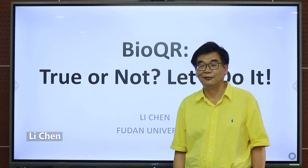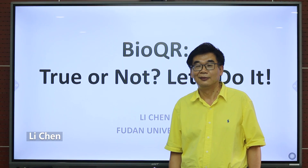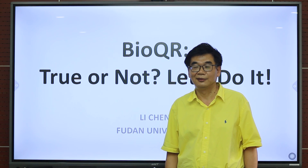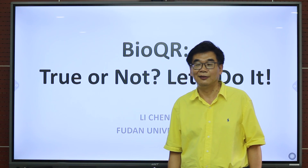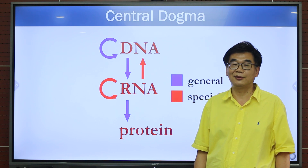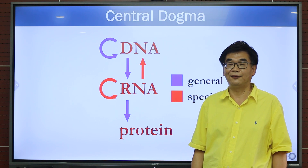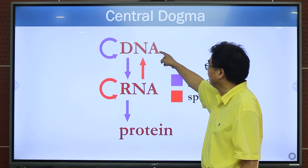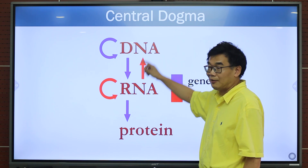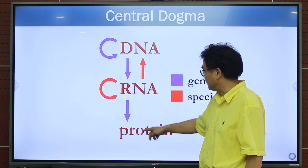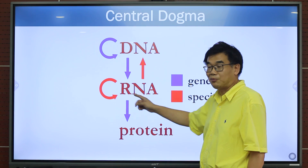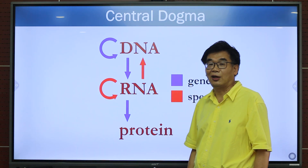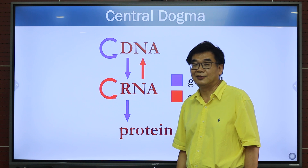What is life? Different people have different answers. In 1957, Dr. Crick proposed that life is a process. It starts from DNA, and DNA makes RNA, and RNA makes protein. This process is called the central dogma in life science.